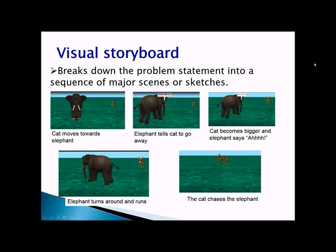A visual storyboard means you can draw it or create a scene-by-scene sketch. You take the problem and break it down into a sequence of major scenes. For example, scene one: the cat moves towards the elephant — initial scene with a cat and an elephant. Next scene: the elephant tells the cat to go away. Then the cat becomes bigger, the elephant says 'ah,' turns around and runs, and the cat chases the elephant. If you're an artist you can draw this picture by picture.